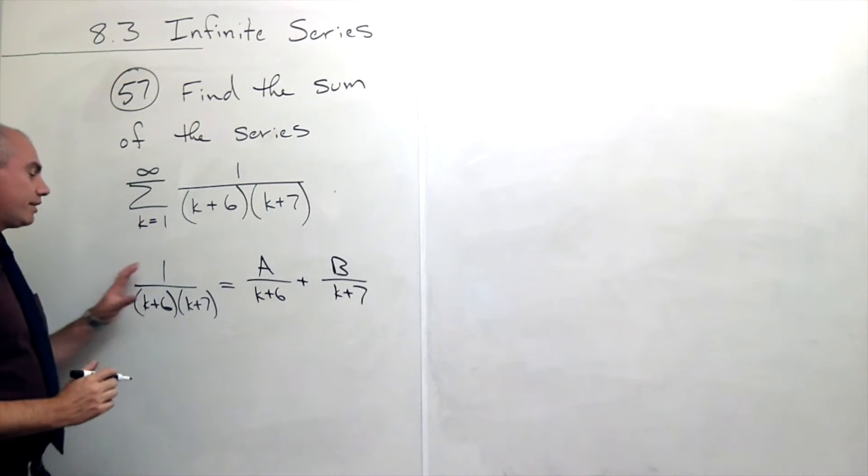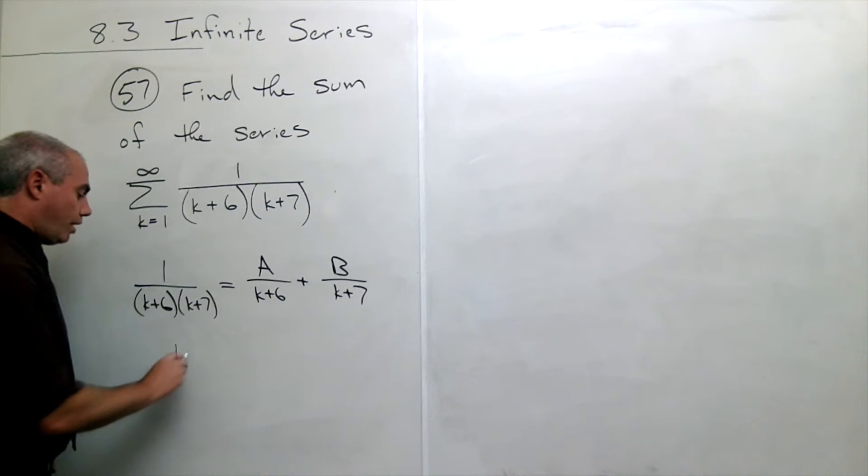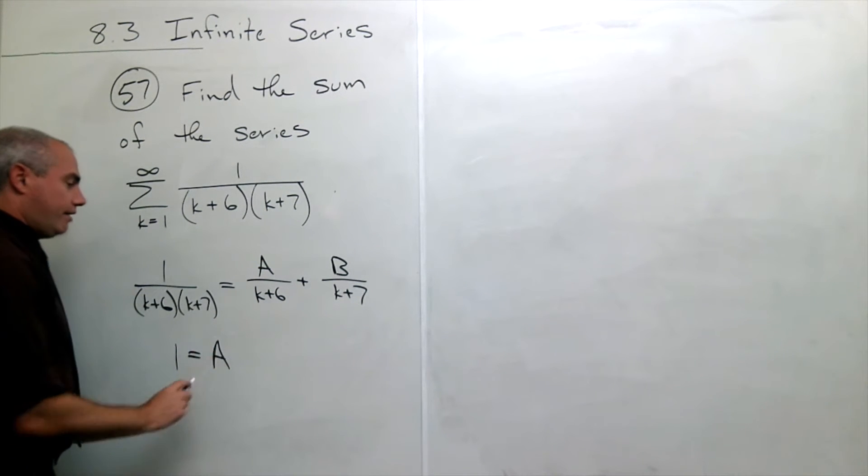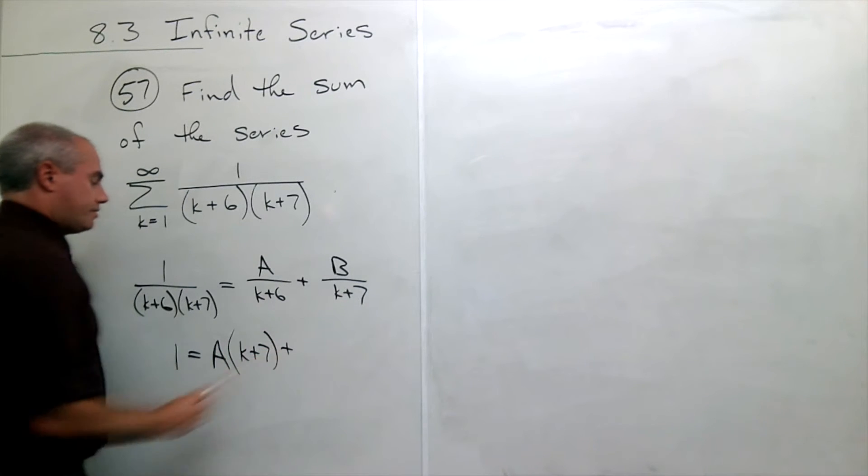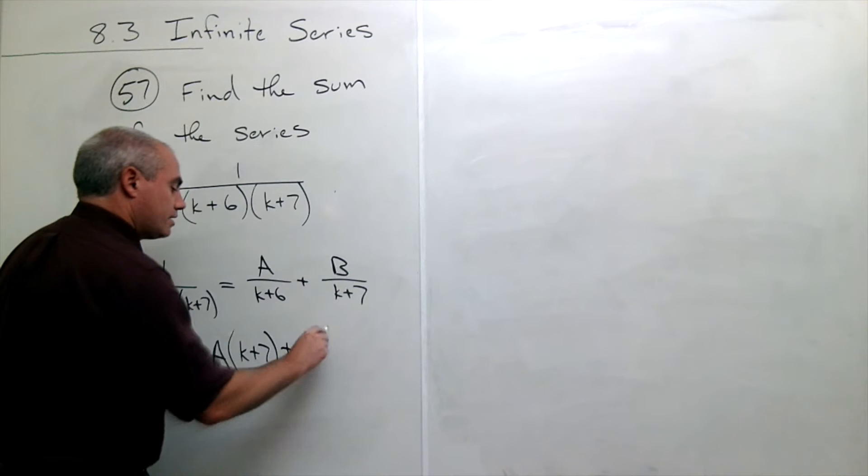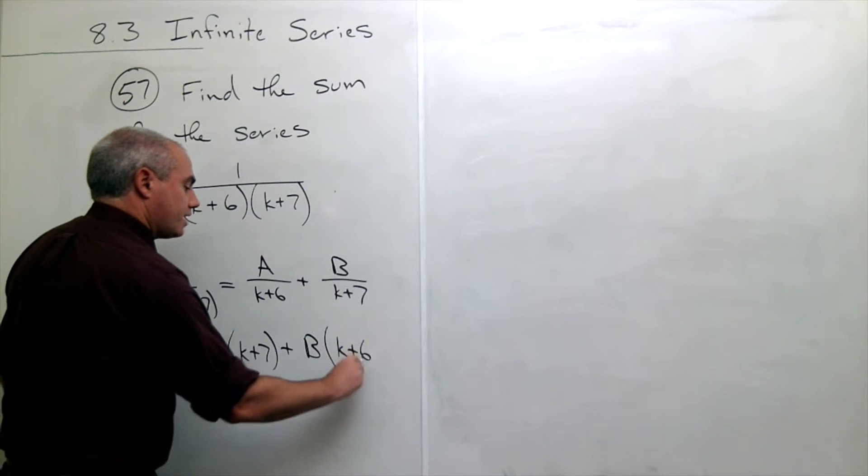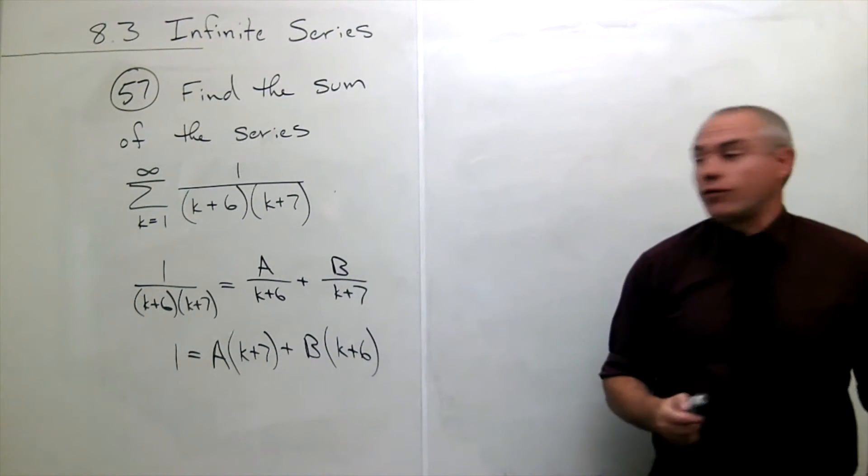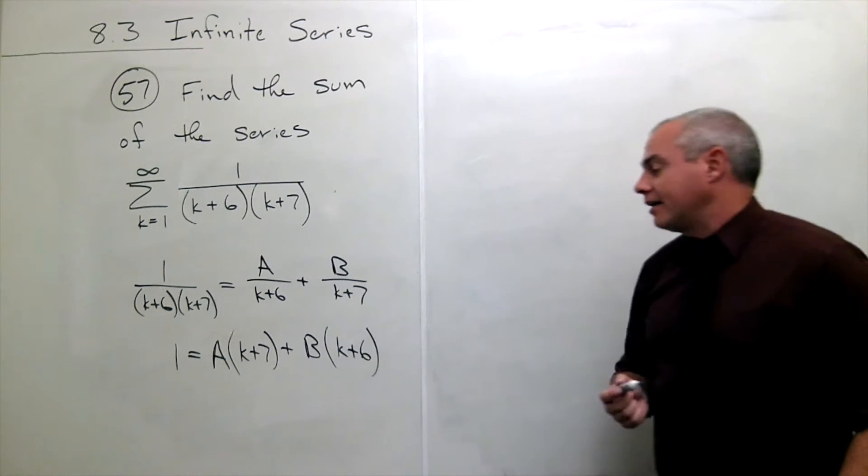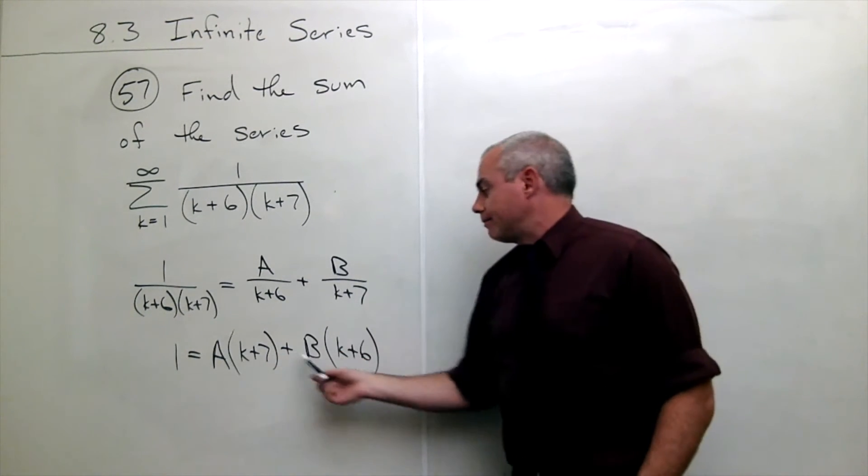Now I could clear out all the fractions on this and I get that 1 is equal to A times (k plus 7) plus B times (k plus 6). Now by making some good choices for the values of k I can see what A and B are.